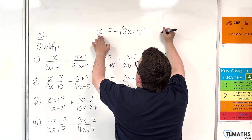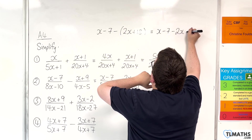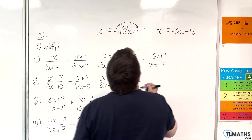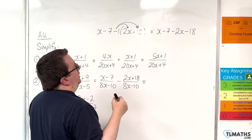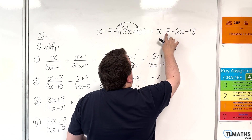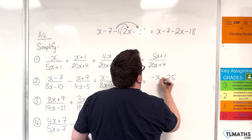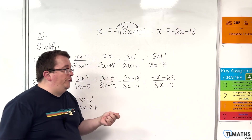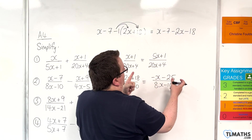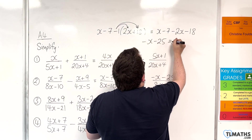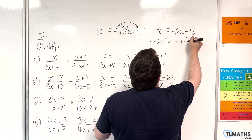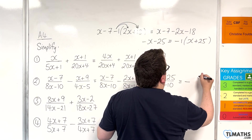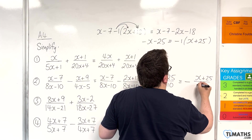So what we have is x, take away 7, take away 2x, take away 18, because that minus 1 is multiplying both the 2x and the 18. So x take away 2x is minus x, and then minus 7 take away 18 is minus 25, giving minus x take away 25 over 8x take away 10. You can also rewrite that by factoring out minus 1 to get minus bracket x plus 25, over 8x take away 10.